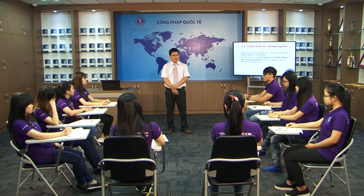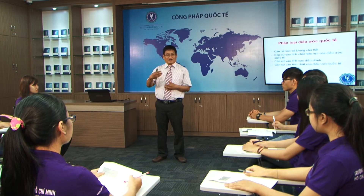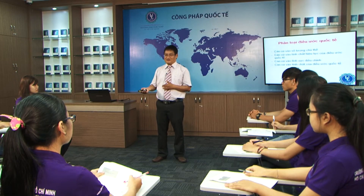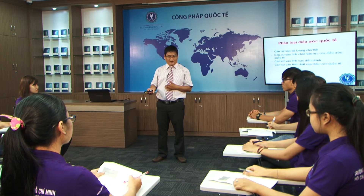Bây giờ chúng ta sẽ đi vào nội dung tiếp theo, đó là việc phân loại các điều ước quốc tế. Điều ước quốc tế là tất cả những thỏa thuận giữa các chủ thể luật quốc tế với nhau, trong đó chứa đựng những ràng buộc, cam kết và quy tắc pháp lý được thiết lập. Vấn đề đặt ra là những điều ước như vậy được phân loại như thế nào? Ở đây có 4 cách thức, 4 tiêu chí để phân loại điều ước quốc tế.